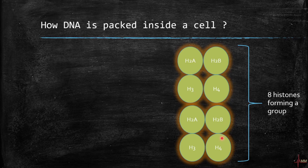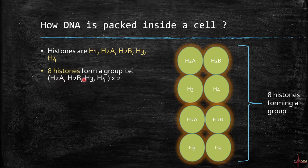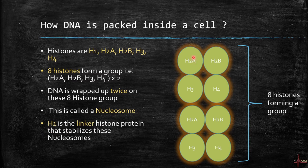These are the histone proteins. There are about five histones we know of: H1, H2a, H2b, H3, and H4. Eight histones — H2a, H2b, H3, and H4 times two — form a group, called a histone octamer. The DNA is going to wrap up twice on these eight histones, forming a structure called a nucleosome. H1 is not part of the octamer; H1 is a linker histone protein that stabilizes these nucleosomes.